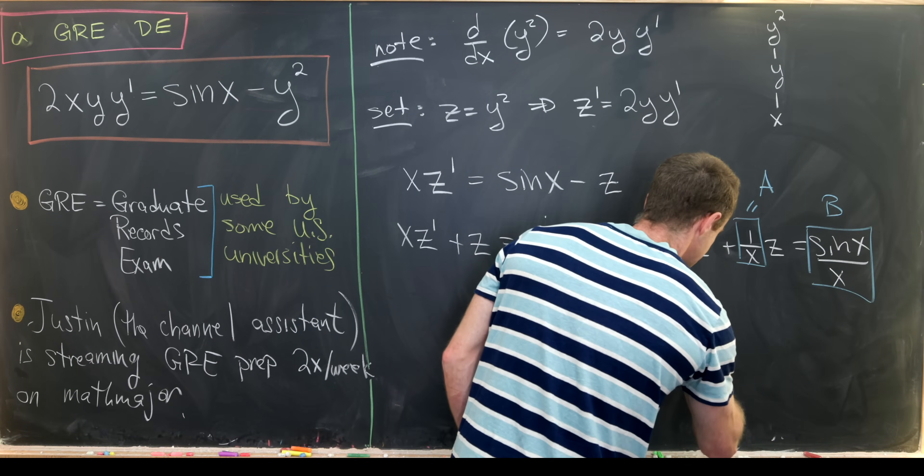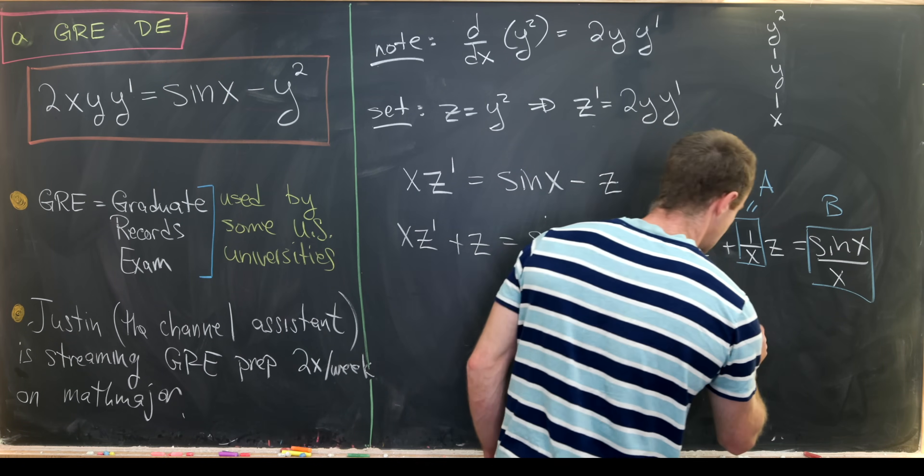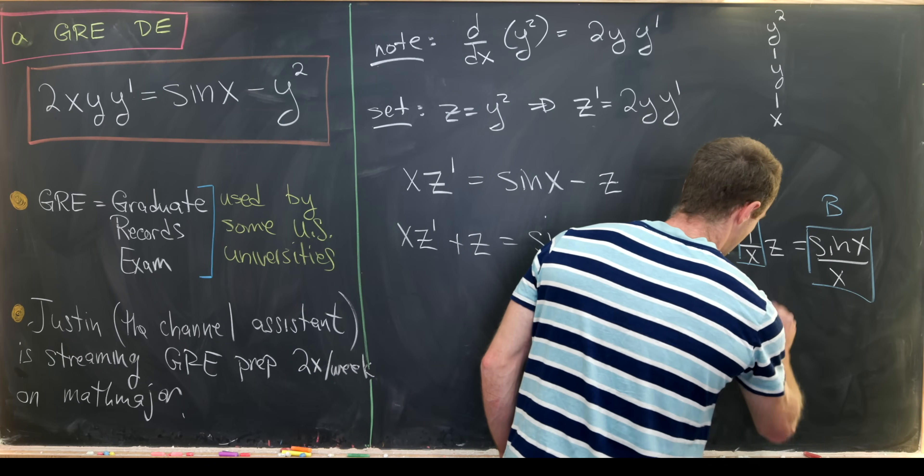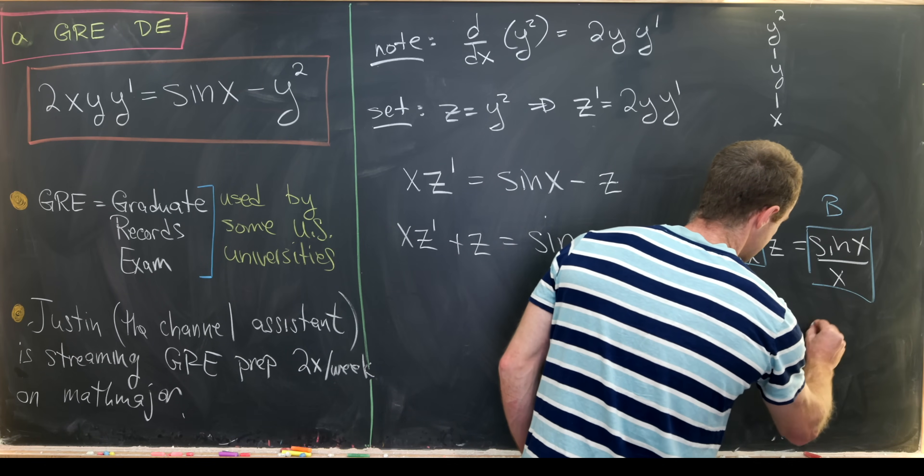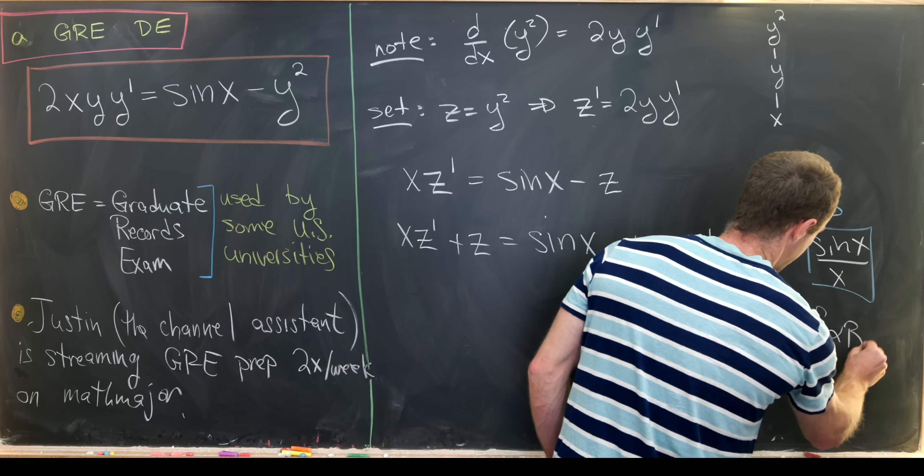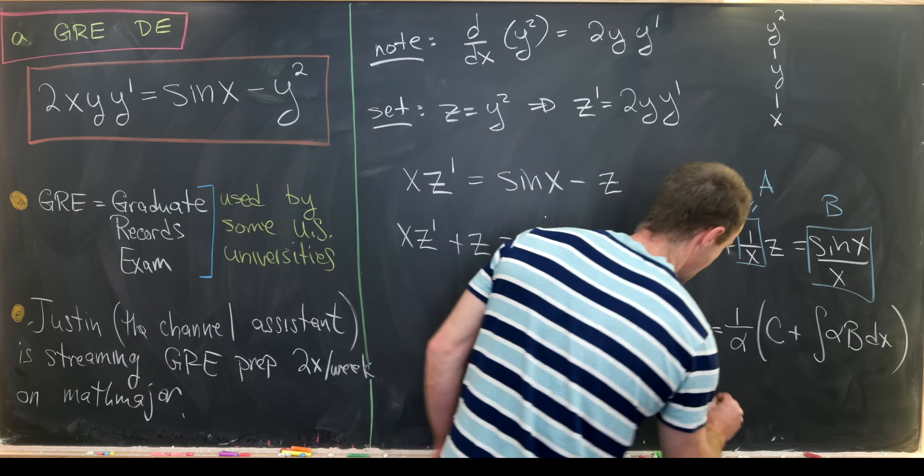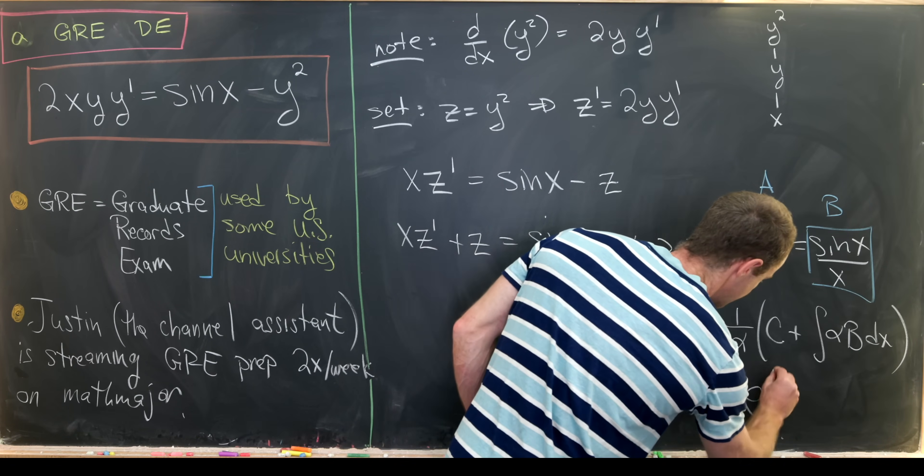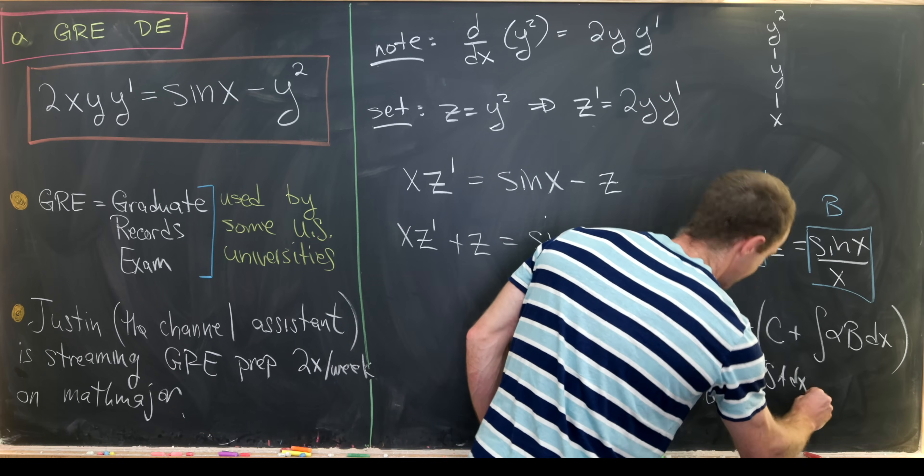And then we have an immediate solution which is given by z equals 1 over alpha times a constant plus the integral of alpha times B dx, where alpha is equal to e to the anti-derivative of A dx.